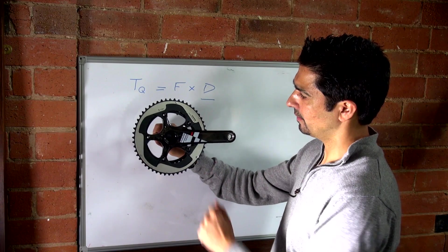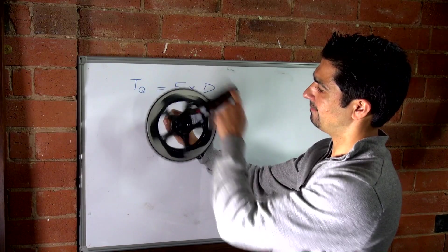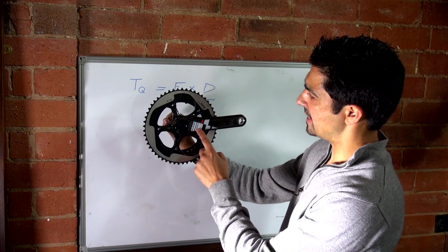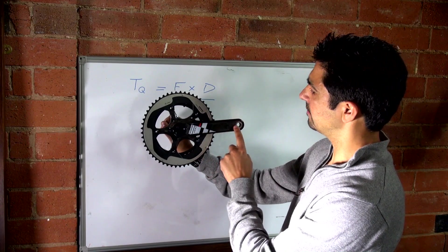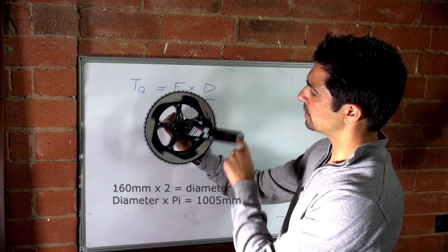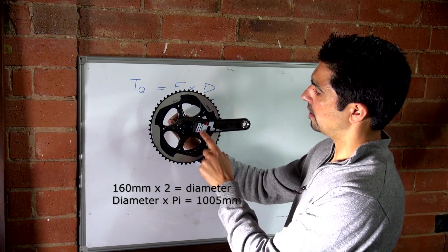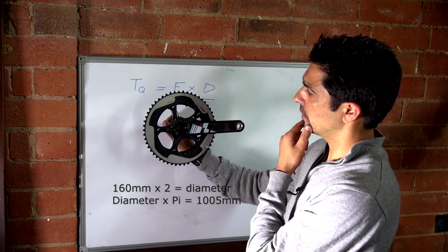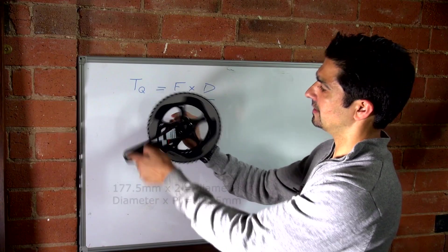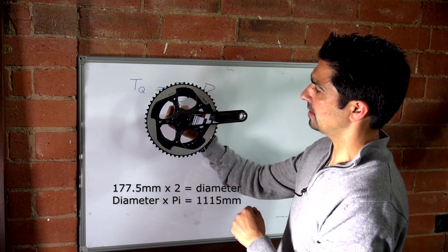However, there is a problem here, which is that a long crank requires a greater distance around the circle that you pedal. In fact, a 160mm crank would require about a 1m circle, whereas a 177.5 crank would require 1m10, in other words, 10cm further travel going from those extreme lengths.